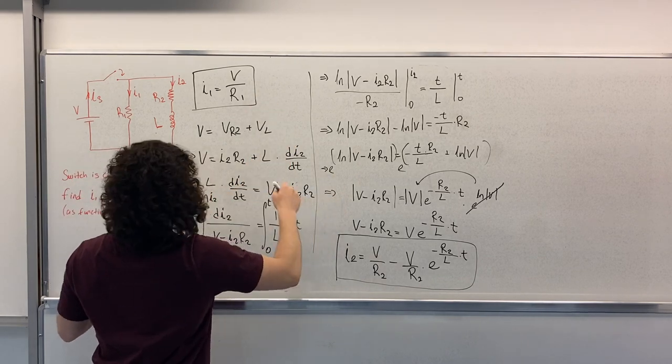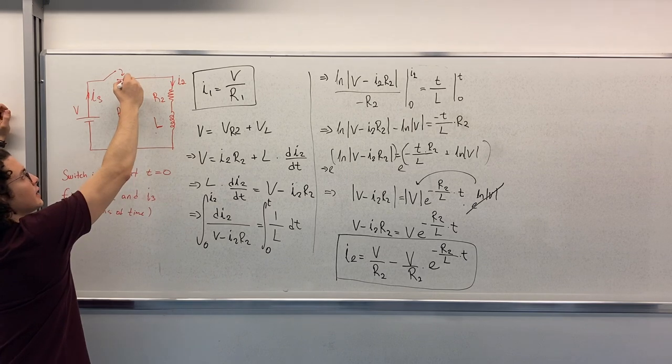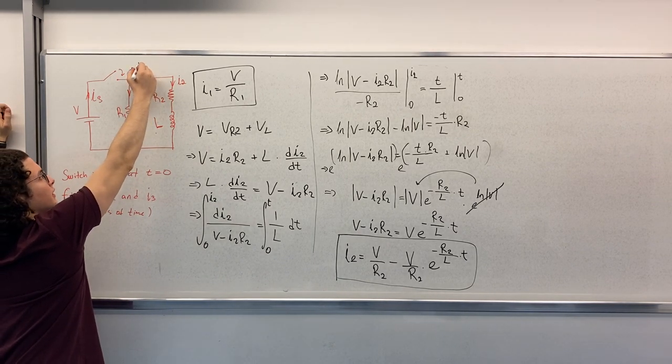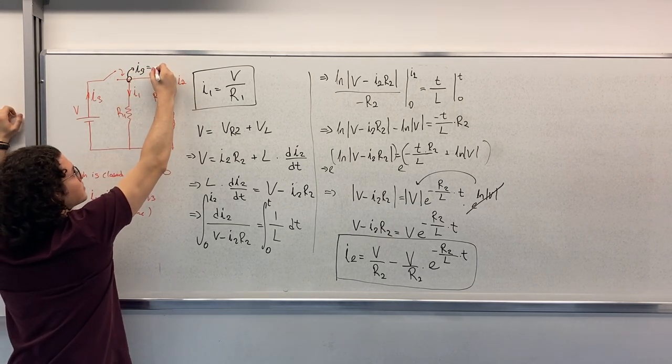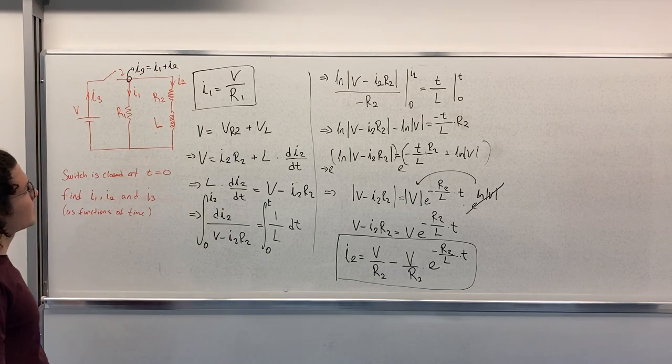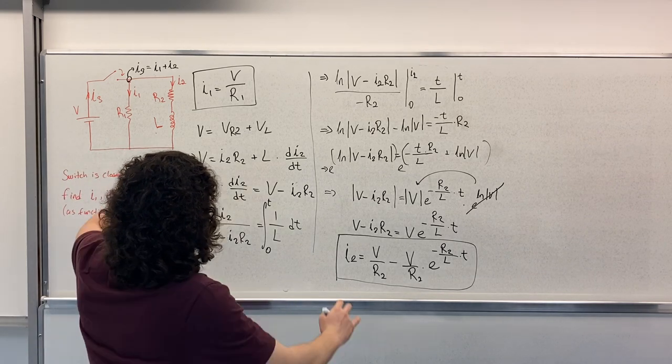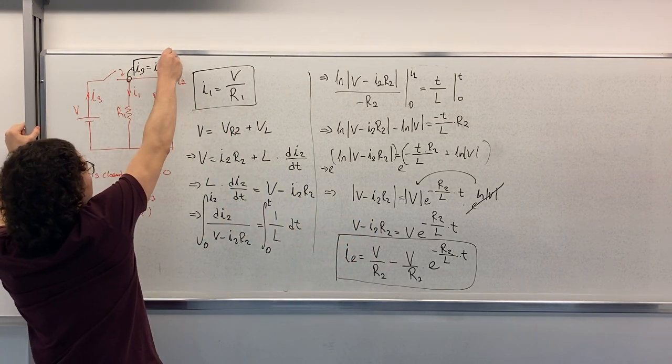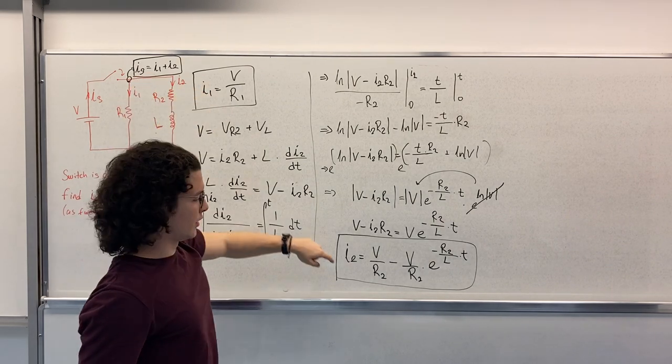So now we have to find I3. If we write Kirchhoff's current law here, we can see that I3 is equal to I1 plus I2. So I3 is equal to the sum of these. I won't write it here, but I3 is I1 plus I2.